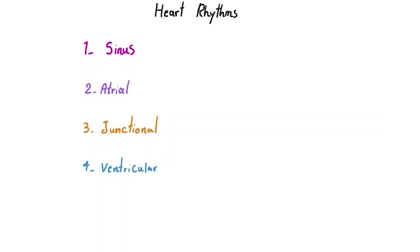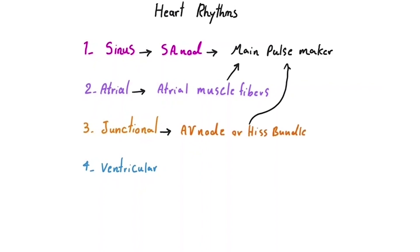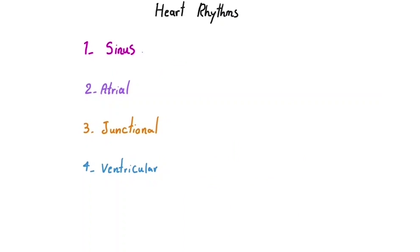1. Sinus rhythm, where the SA node is the primary pacemaker. We've already discussed this. 2. Atrial rhythm, where another focus within the atria takes over. 3. Junctional rhythm, where cells from the AV node or the His bundle become dominant. 4. Ventricular rhythm, where pacemaking activity arises from the ventricular cells. To recognize each of these rhythms, we still ask the same four key questions as before.